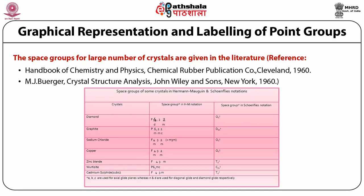Sodium chloride has space group F 4/m 3̄ 2/m (equivalent to m3m) in HM notation and O⁵ₕ in Schoenflies notation. Copper has space group F 4/m 3̄ 2/m in HM notation, also corresponding to O⁵ₕ in Schoenflies notation.